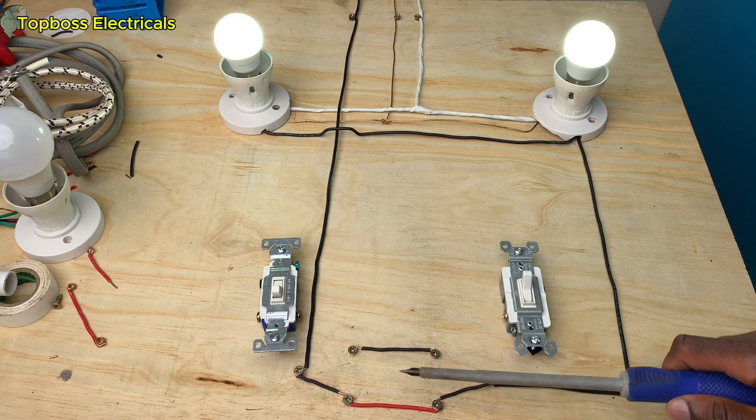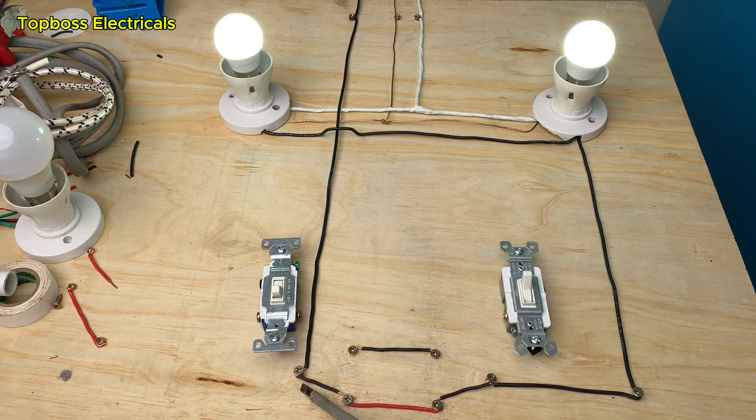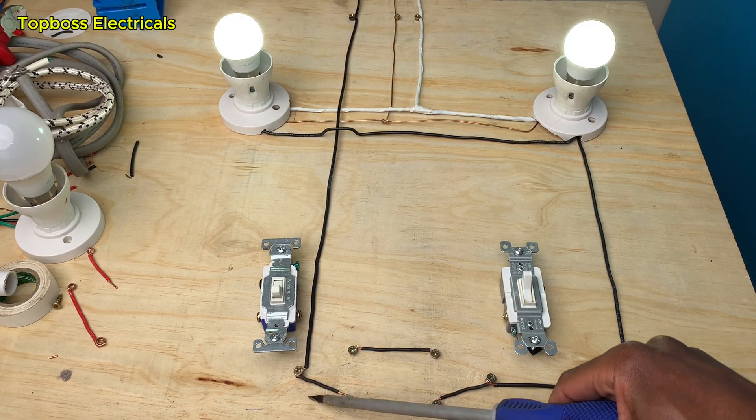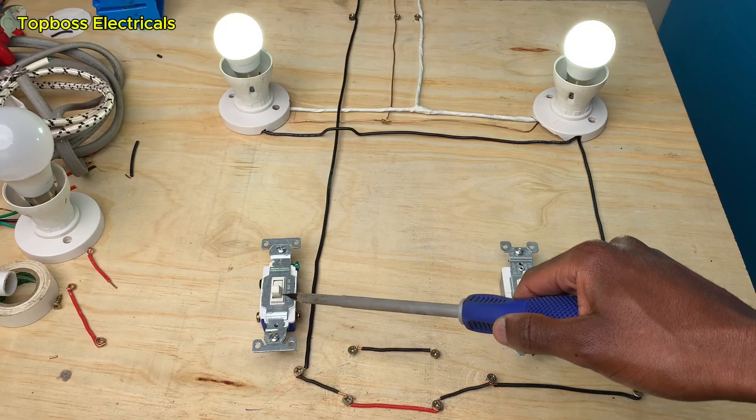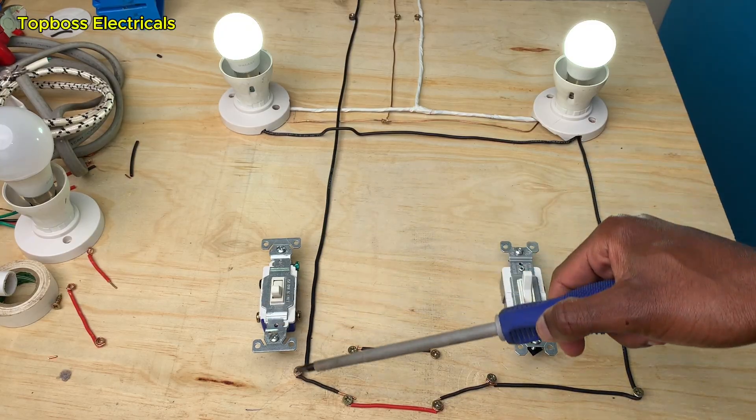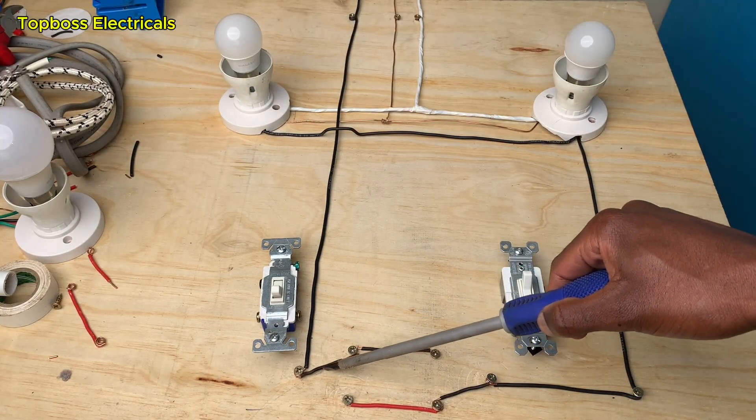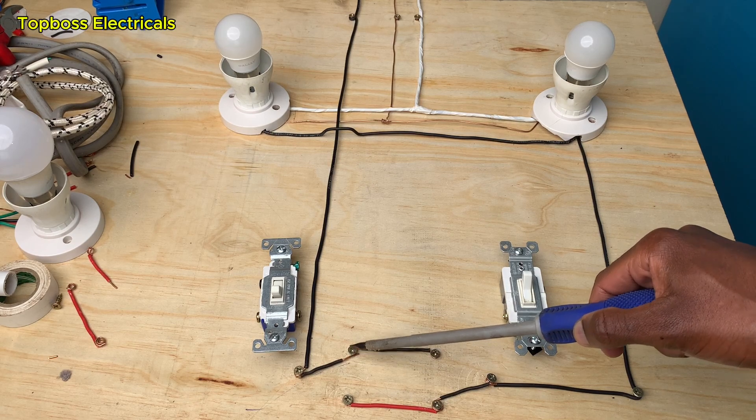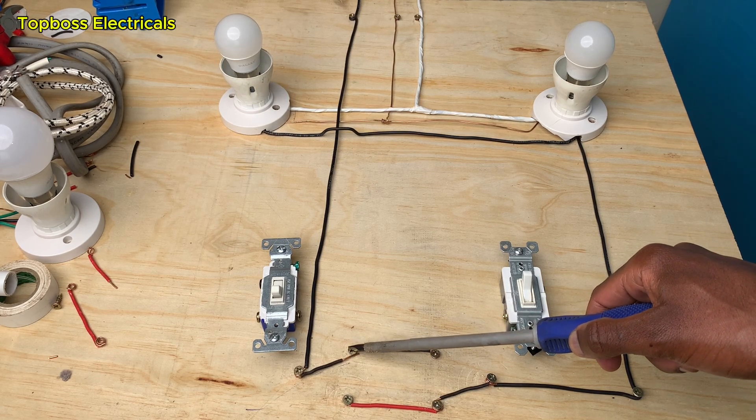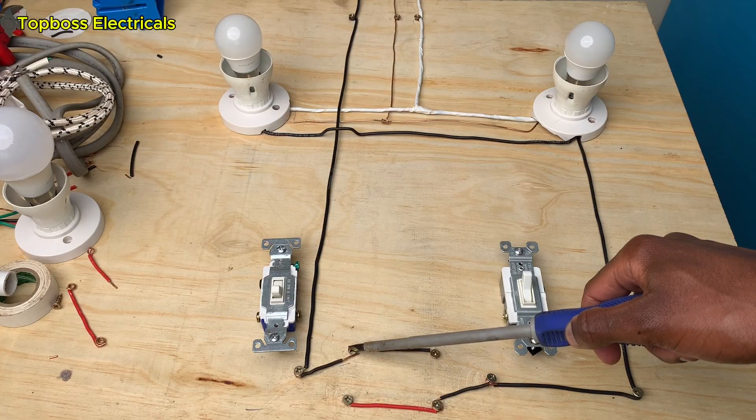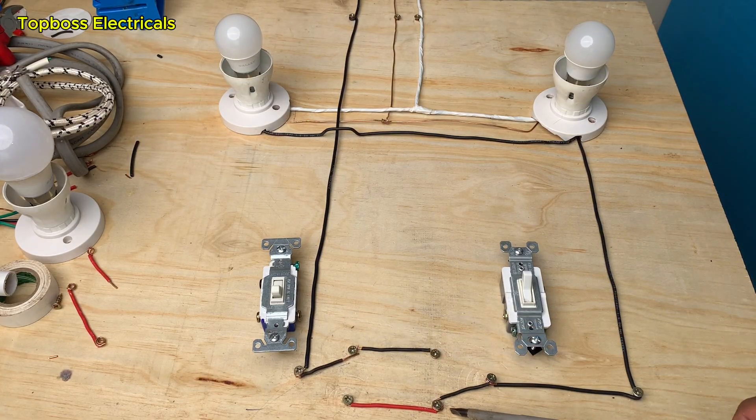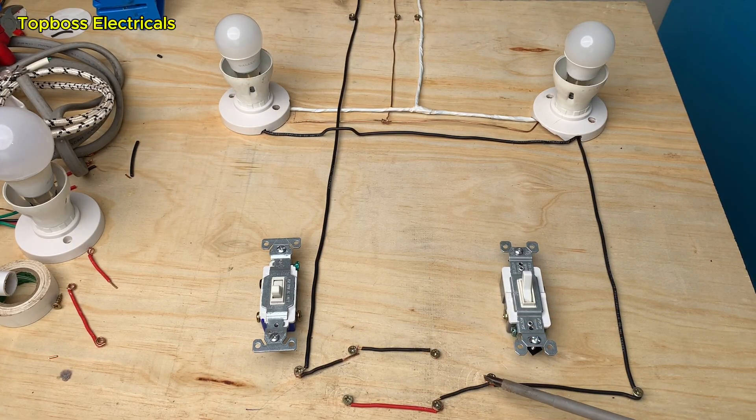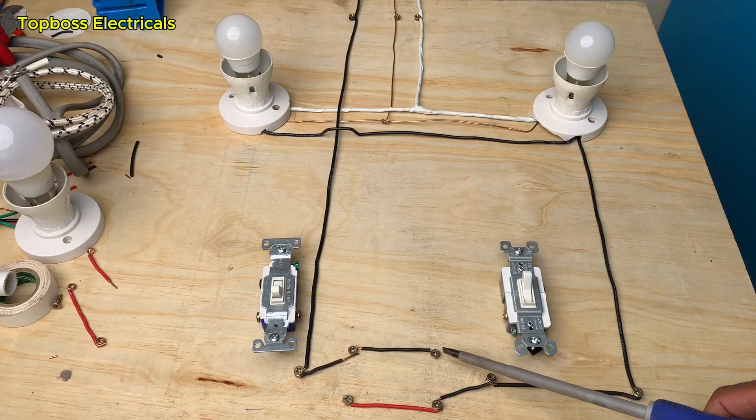If I flip it in any direction, it means that this common is either engaging on this traveler or this traveler. The same happens here: every time that I touch this switch by flipping it up or down, it engages automatically on one of the travelers. It may engage on the upper part to turn it off or on, depending on where this other common is attached to the travelers.